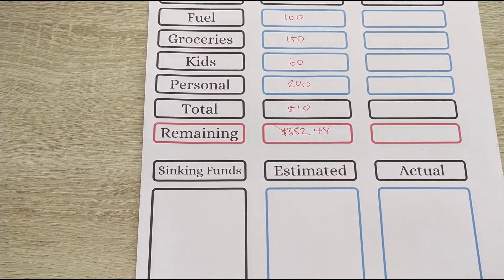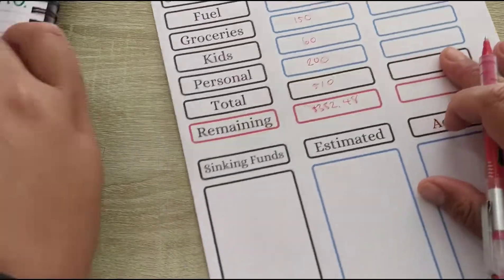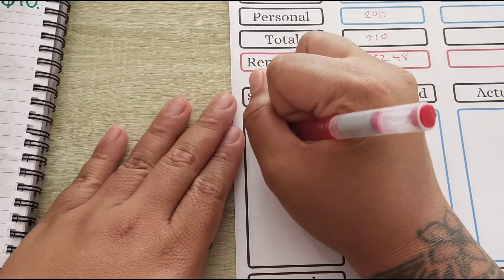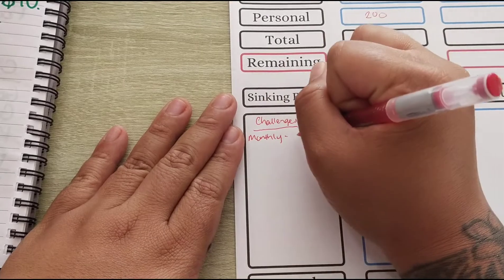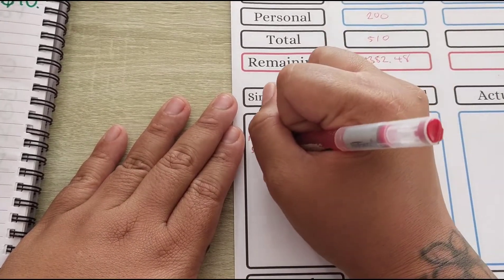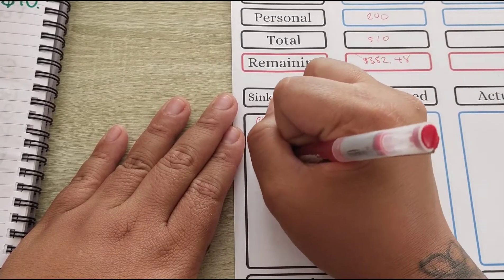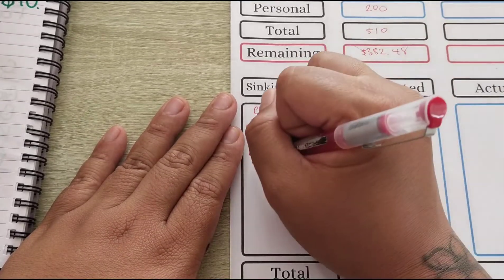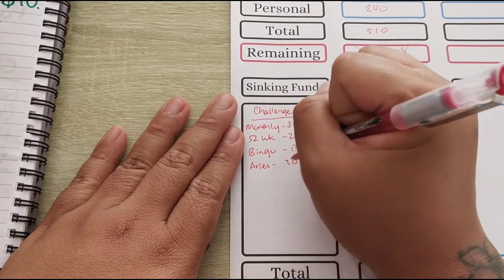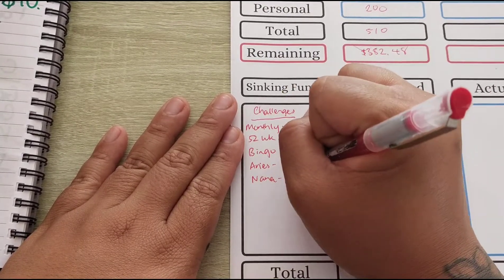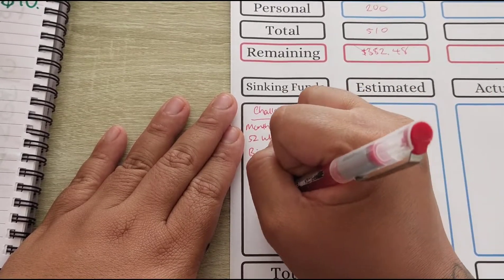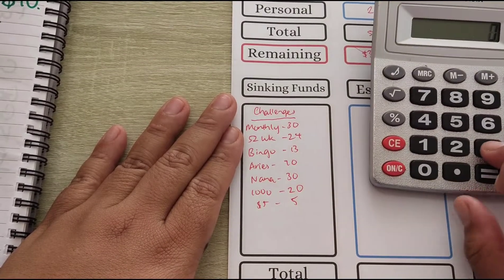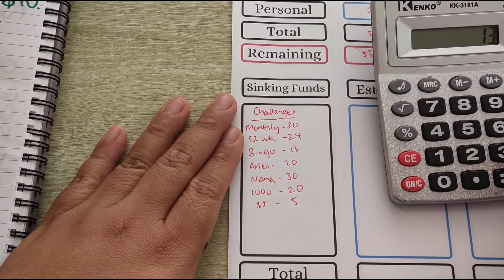All right, now our sinking funds. First off is our challenges. So since it is the first paycheck of the month, we do have the monthly one of $30. We've got the 52-week of $24. We've got Bingo, Bingo is every fortnight on my paycheck, is $13. Aries is going to get $70 and it's going to get $30. 1000 is going to get $20 and the $5 night is going to get $5. Let's see how much that is all together. That is $192.